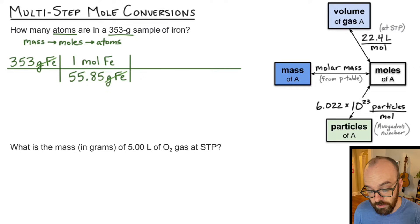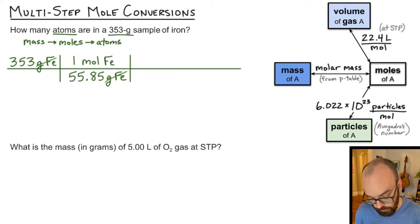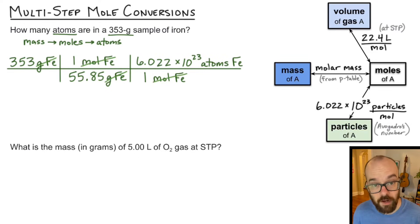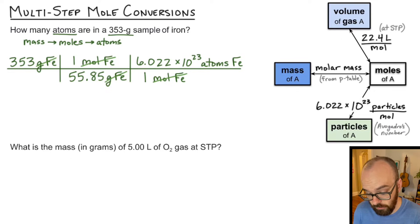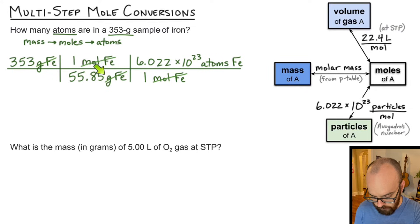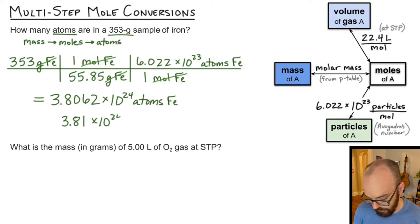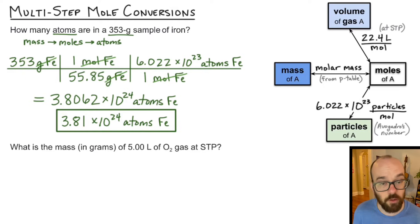Now I need to convert from moles to number of particles — atoms. For moles to particles I use Avogadro's number: 6.022 times 10 to the 23rd particles per mole. I put moles in the denominator so it divides out with moles in the numerator. Then 6.022 times 10 to the 23rd atoms goes on top. Moles of iron divide out, leaving atoms of iron. I take 353 times 6.022 times 10 to the 23rd and divide by 55.85, getting 3.8062 times 10 to the 24th atoms of iron.